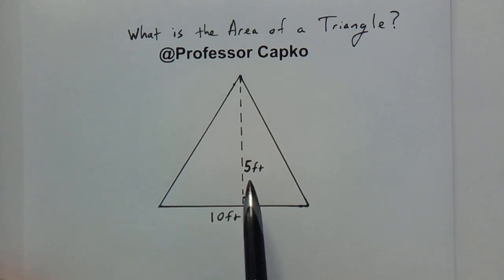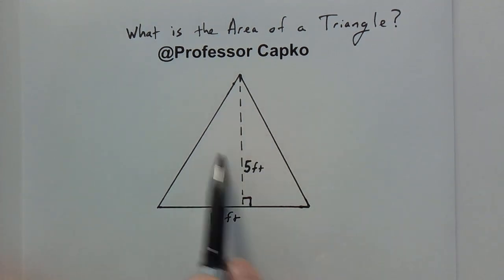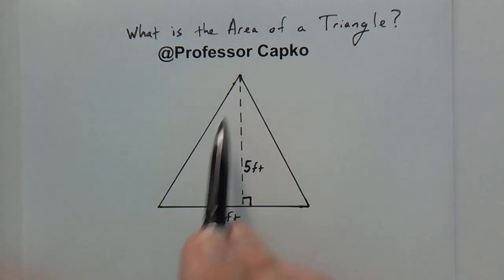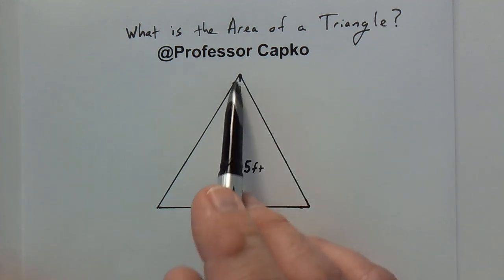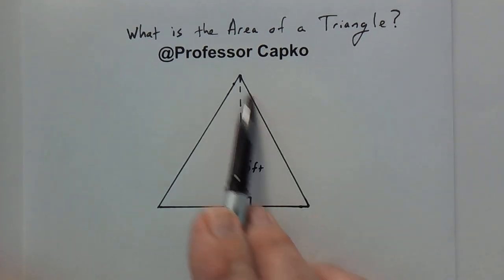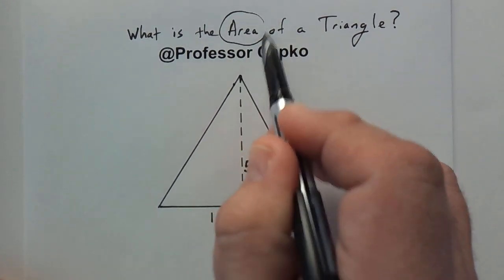This is an example of a triangle and we're going to find its area. The area is everything inside - how much is inside. So if you were to paint it, for example, how much paint would you need? That would be different from the perimeter. The perimeter would be the distance around. In this case, in today's video, we're going to find the area.